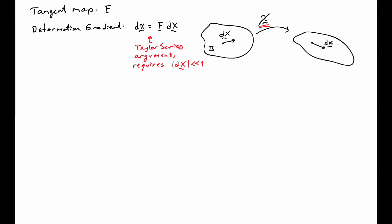What I'd like to do now is look at a second interpretation, which is known as the tangent map. I'm going to start by looking at a body B, the reference configuration, and consider a curve L on this body.